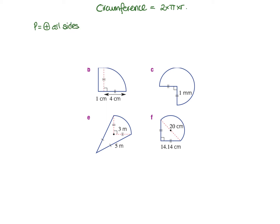In this first example, what we have is a little section — that's a little part of a circle. If you think about a circle broken up into quarters, what we have in this example is just this one quarter. So if I'm going to find the perimeter of that bit, I go a quarter times the formula for a circle, which is 2πr.